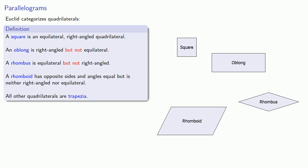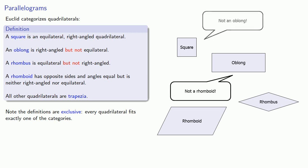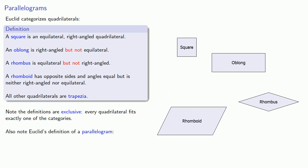And there are a couple things worth pointing out about Euclid's definitions. First, we might note that the definitions are exclusive. Every quadrilateral fits exactly one of the categories. And we also note Euclid's definition of a parallelogram. Specifically, there isn't one. And similarly, while trapezia fall into the all other quadrilaterals, there's no specific definition for a trapezoid. However, Euclid does know that parallelogramic regions have certain useful properties. And so, we'll call them parallelograms, even though Euclid doesn't have a specific term for them beyond parallelogramic regions.